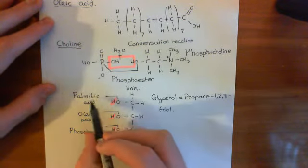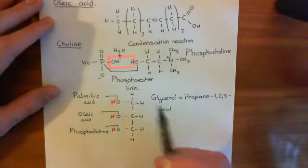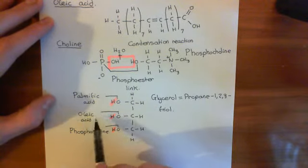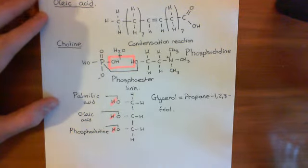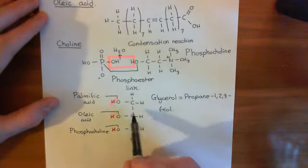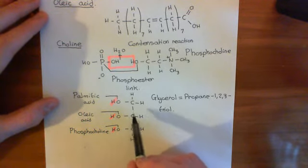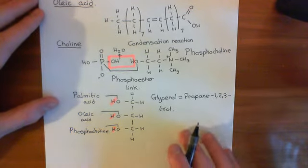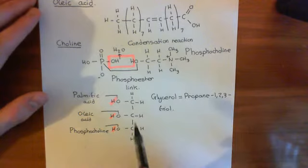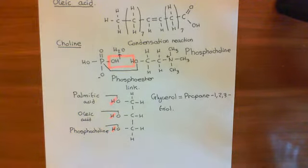So: 1-palmitoyl, because palmitic acid when attached to something is known as a palmitoyl group; 2-oleoyl, because oleic acid when attached is known as an oleoyl group; SN refers to the fact that the middle carbon is a chiral centre with four separate groups — two optical isomers exist but we won't dwell on that; glycero is short for glycerol; and then 3-phosphocholine. That's our POPC molecule.